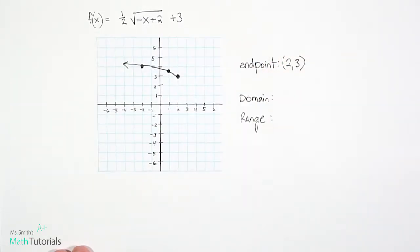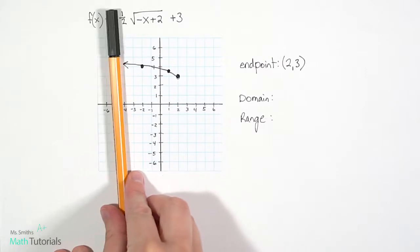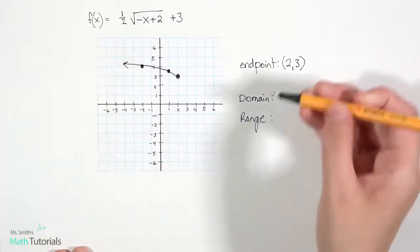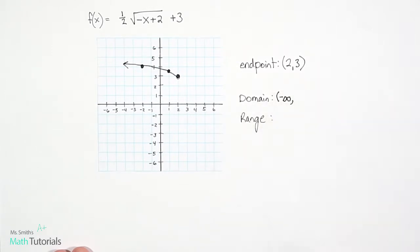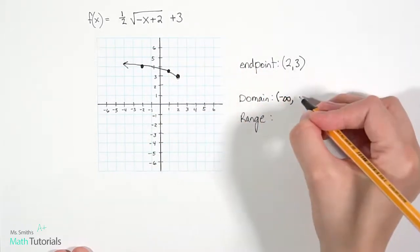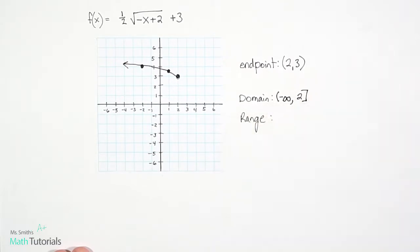And when I list my domain, when I come in from the left, the first place I hit is an arrow. So that means negative infinity because it's on the left. So it's negative. And when I come in from the right, I hit a solid point at positive 2. So the 2 gets a bracket.